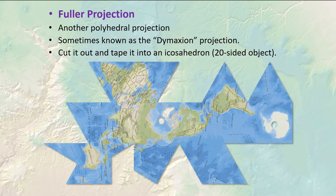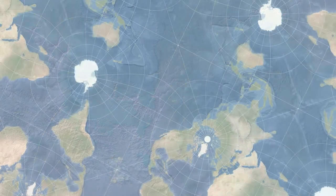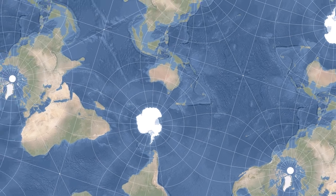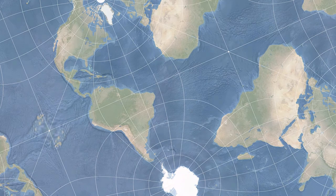Here we have another polyhedral projection called the Fuller projection, sometimes known as the Dymaxion projection. This one is composed of triangles that you can cut out and fold into a 20-sided object — if any of you ever played Dungeons and Dragons with those 20-sided dice, well, this is what you get. The Pierce quincuncial is a neat one. It looks interesting all by itself, but it has this really interesting property in that it can be tiled — you can make a whole bunch of them, stitch them all together and come up with a larger overall image. This one kind of reminds me of that movie Inception.